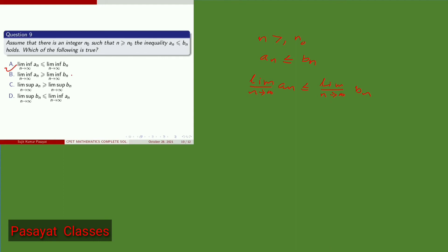Option B states lim inf of a_n ≥ lim inf of b_n — this is a wrong statement. Similarly, option C states lim sup of a_n ≥ lim sup of b_n — also wrong. Option D states lim sup of b_n ≤ lim inf of a_n — also wrong. So option A is the correct one, as it is the known result for limit infimum.